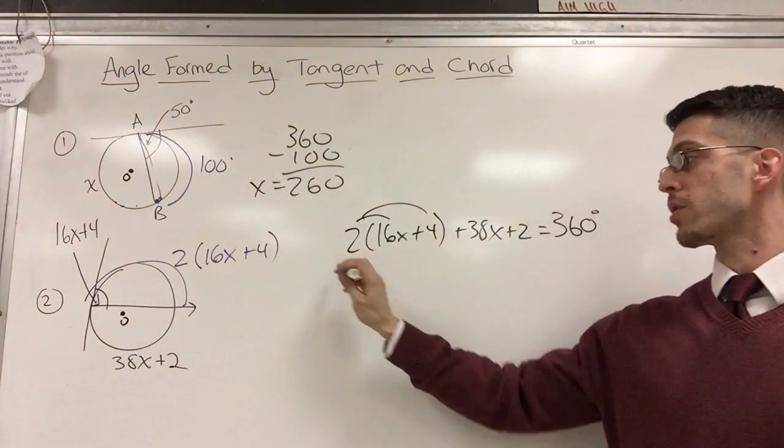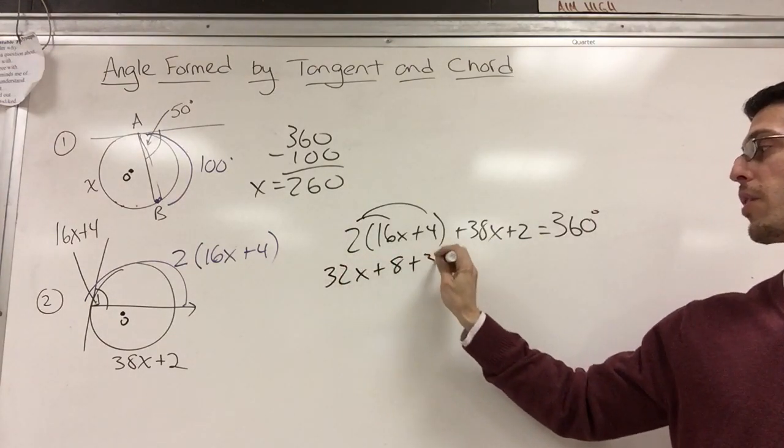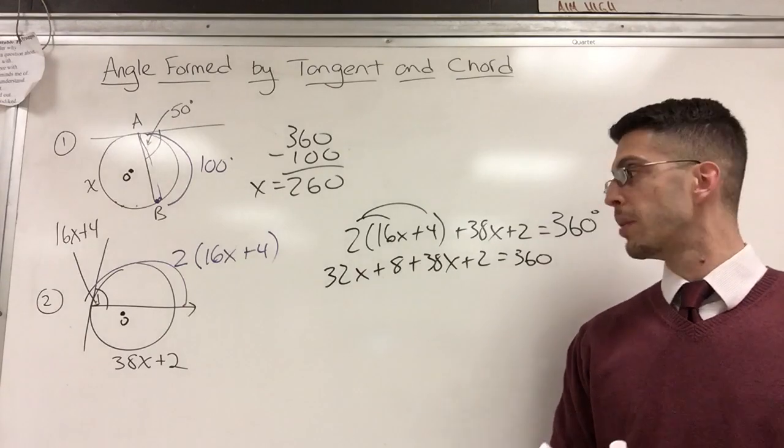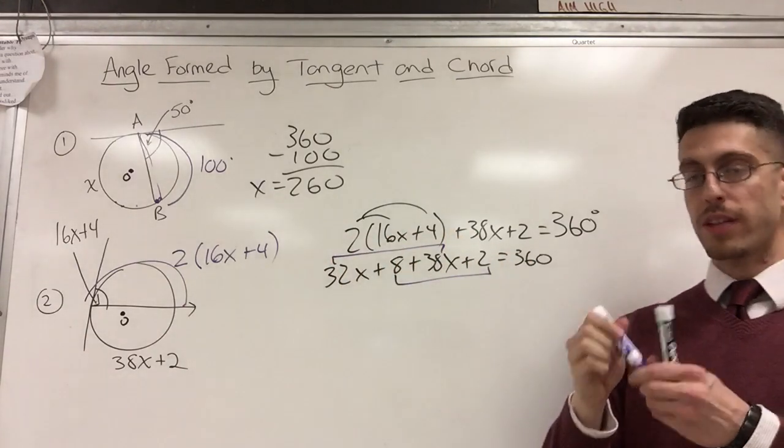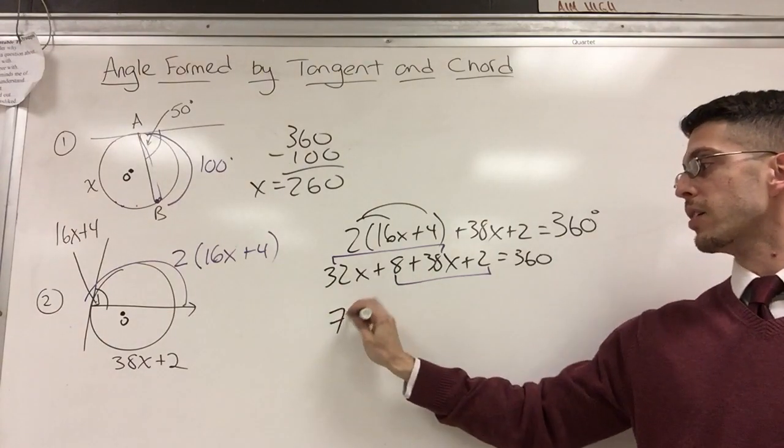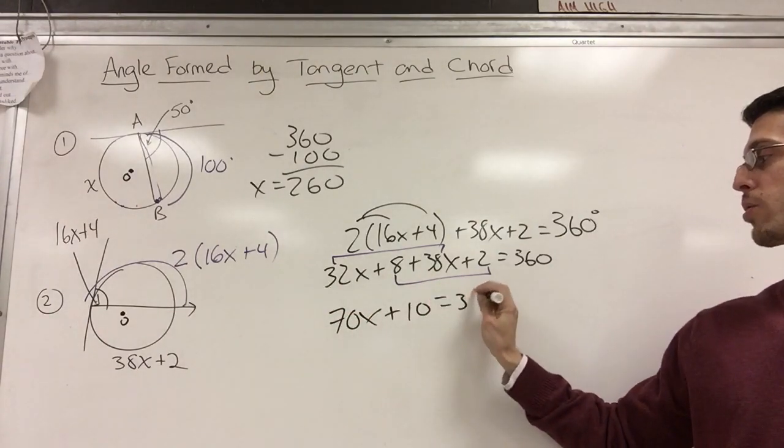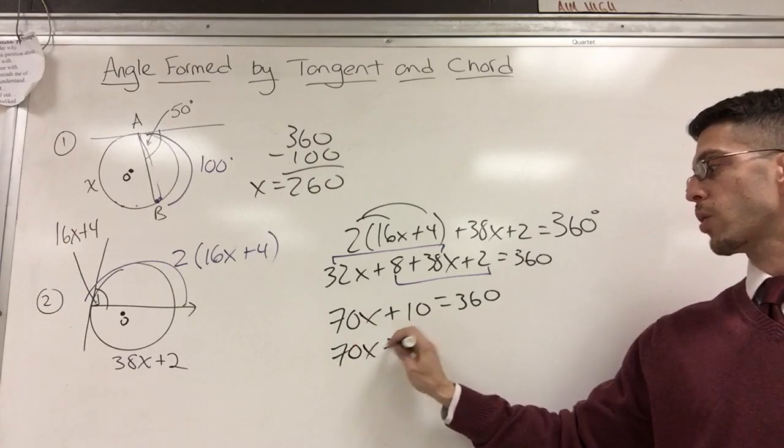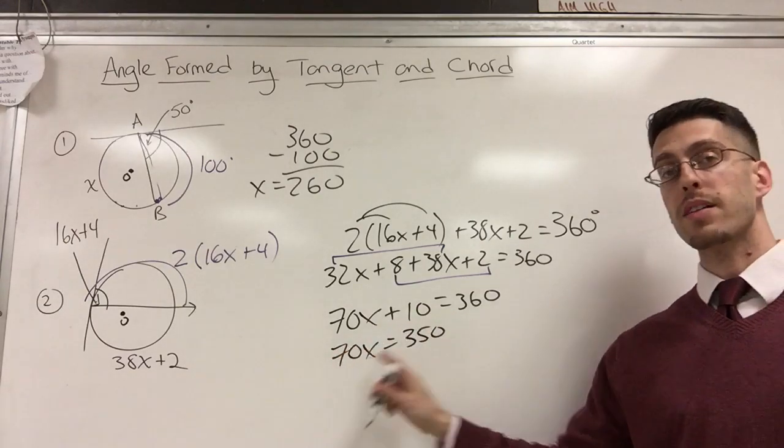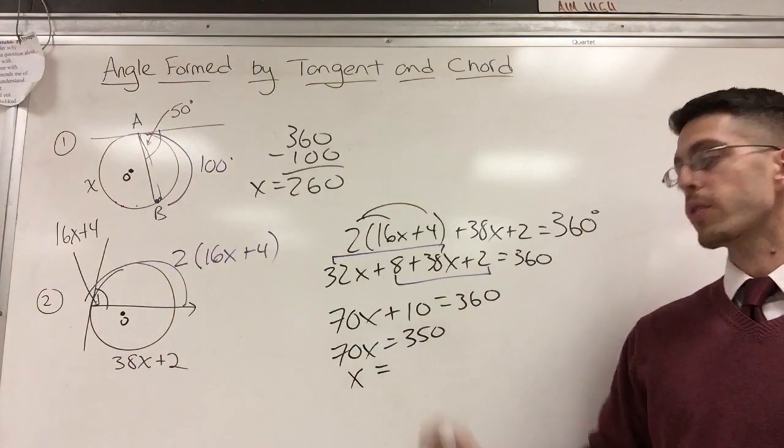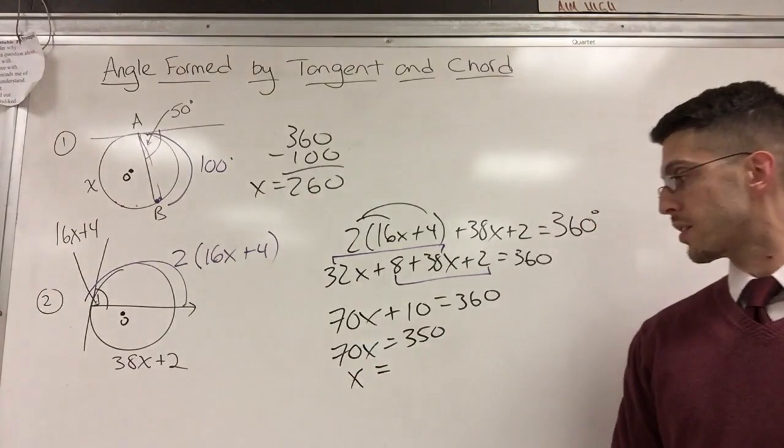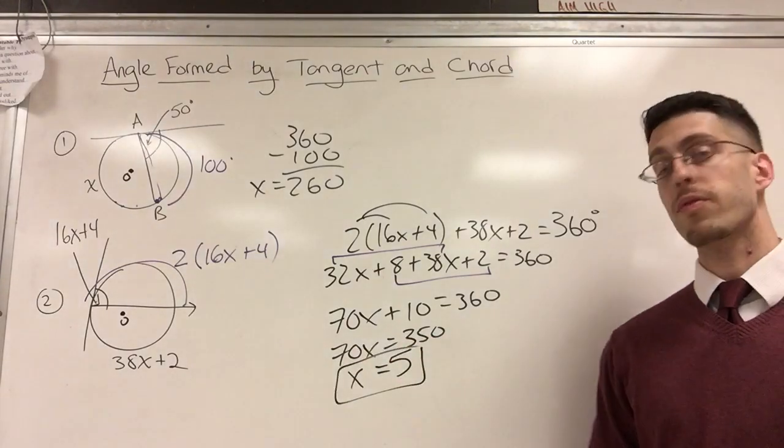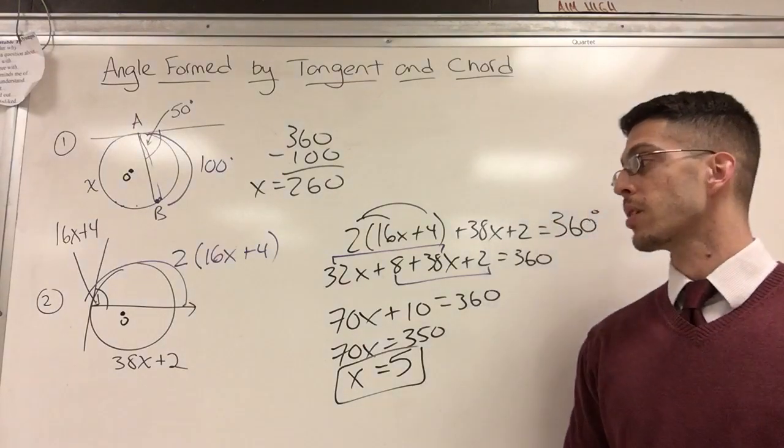Now we just do some fancy algebra to remind you of last year. What is this? 32X plus 8 plus 38X plus 2 equals 360. I'm going to combine like terms at the same time, so that's going to give me 70X plus 10 equals 360. Subtract 10 on both sides, you're going to get 70X equals 350. Divide by 70 on both sides, and whatever your calculator tells you is the answer. Let's see, 7 goes into 35 five times, so I'm going to go with X equals 5.